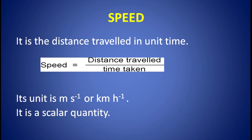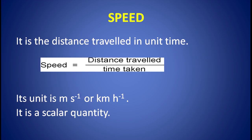Now, let us discuss speed and velocity. What is speed? Speed is the distance traveled in unit time. So, we can write: speed equals distance traveled divided by time taken. Its unit is meter per second or kilometer per hour. Speed is a scalar quantity because it does not require direction for its complete specification.